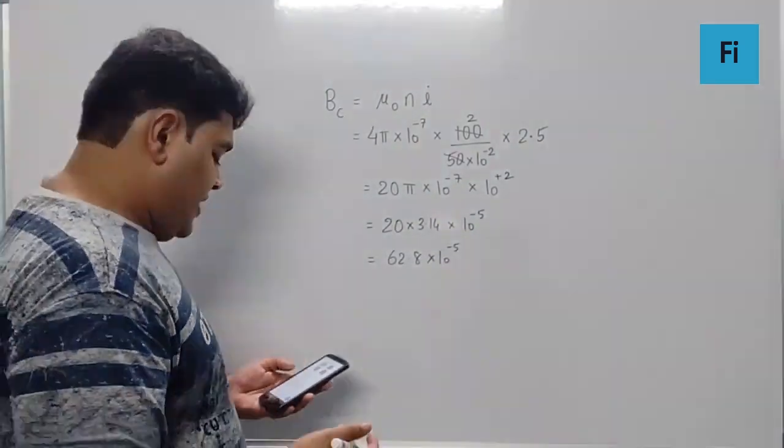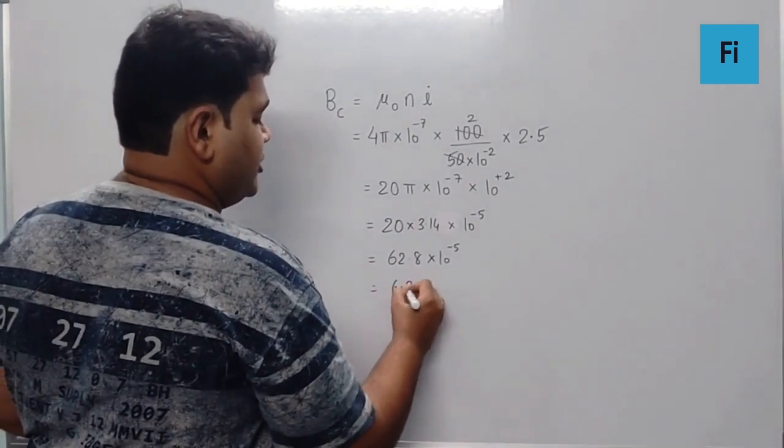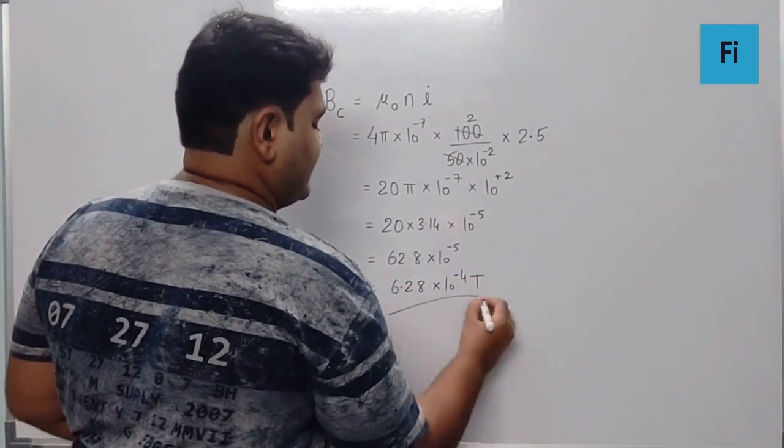As per the options, we have the final answer as 6.28 × 10⁻⁴ tesla.